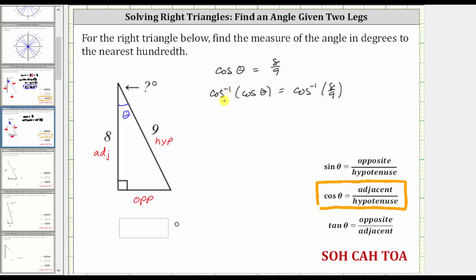Simplifying on the left, inverse cosine of cosine theta simplifies to just theta, because inverse cosine and cosine undo each other. We're left with theta is equal to inverse cosine of eight ninths.